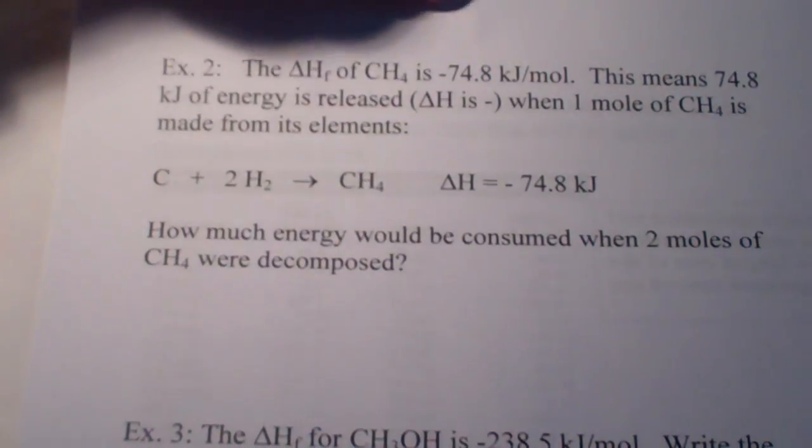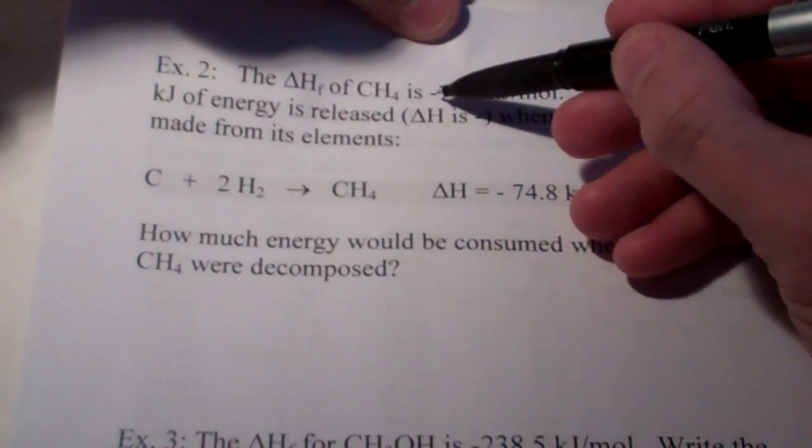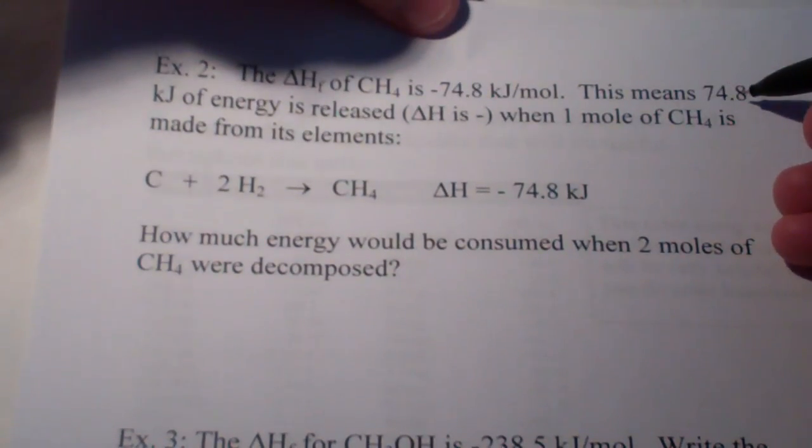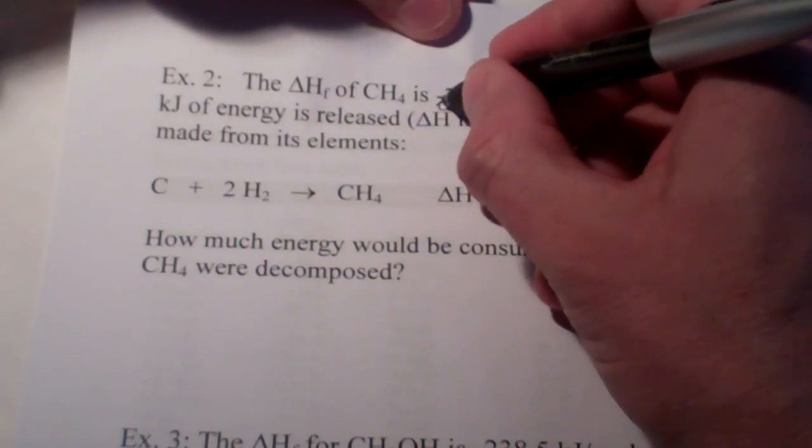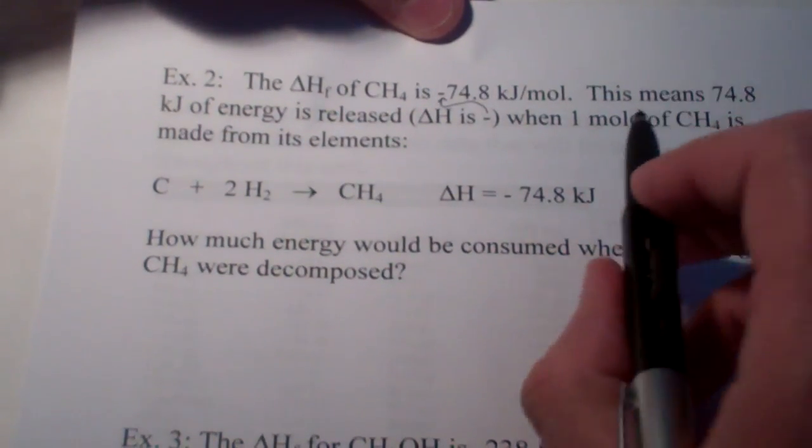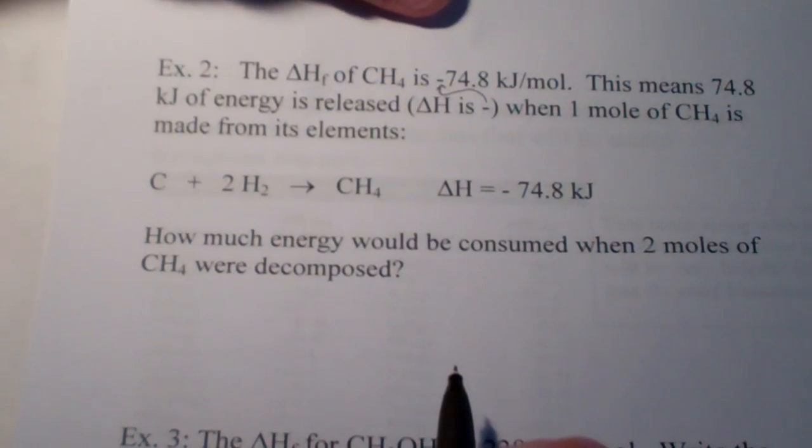Okay, let's try another one. The heat of formation of methane is negative 74.8. Negative. This means that 74.8 kilojoules of energy is released. Remember, delta H is negative. That means it's exothermic. When one mole of methane, CH4, is made from its elements.